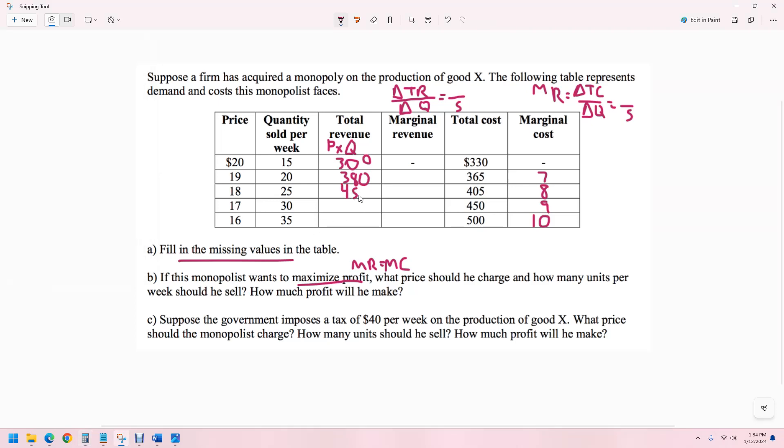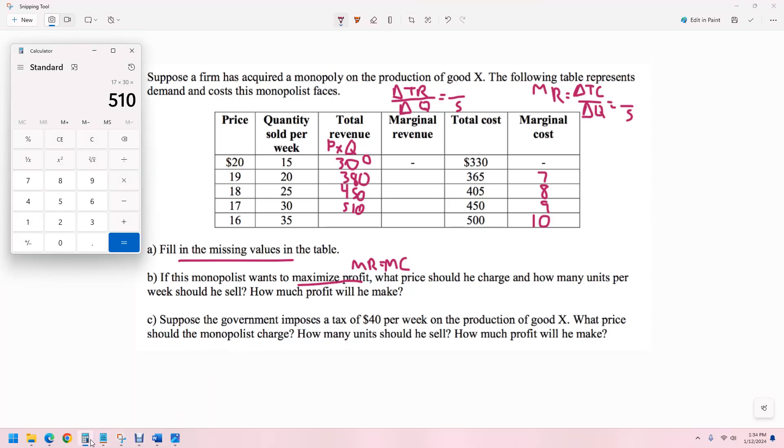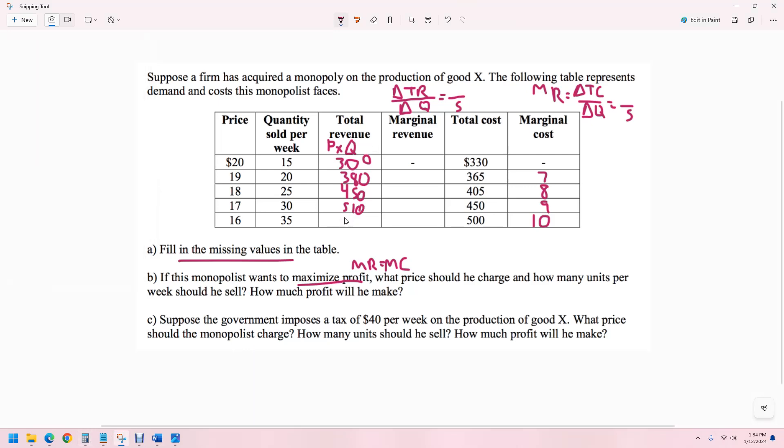450. 17 times 30 is 510. And 16 times 35. Just in case you were on a test and you had to fill this in with a regular calculator. 560.